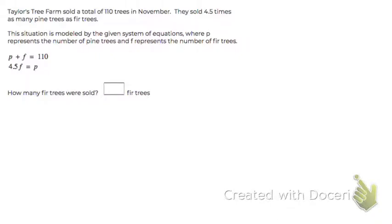Taylor's Tree Farm sold a total of 110 trees in November. They sold 4.5 times as many pine trees as fir trees. They have already written two equations to model that situation. P represents the number of pine trees and F represents the number of fir trees.